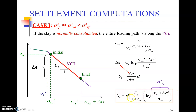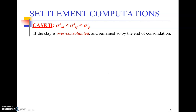From here, delta-e can be computed and using this in a simple expression we can directly calculate the consolidation settlement — this was covered in geotechnical engineering 1. The most important variables are: sigma-dash-v-naught, the present effective overburden pressure; delta-sigma, the new load on the soil; Cc, the compression index; e-naught, the initial void ratio; and H, the thickness of the consolidating soil layer.